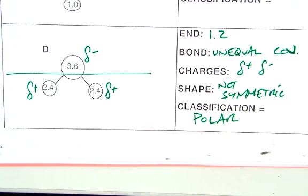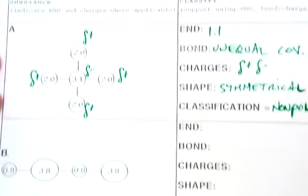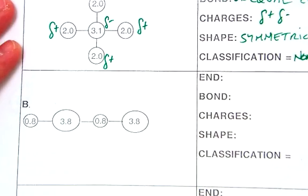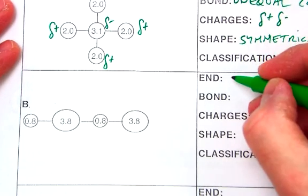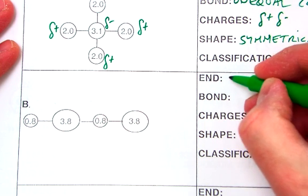All right. Lastly, we're going to take a look at a slightly different one here, example B. When we do our example B, we're going to again do our electronegativity difference, and we're going to come up with 3.0.